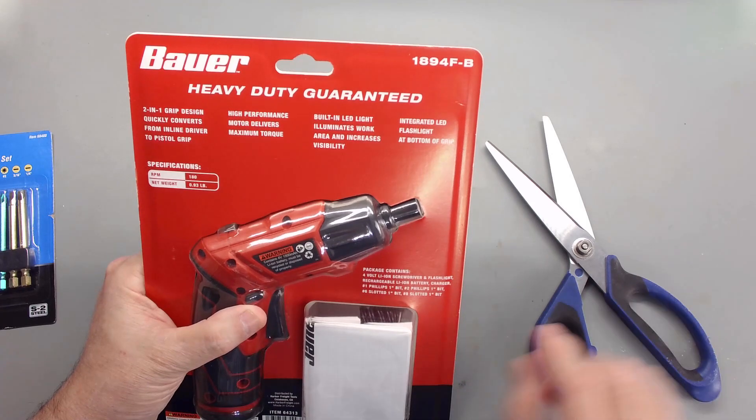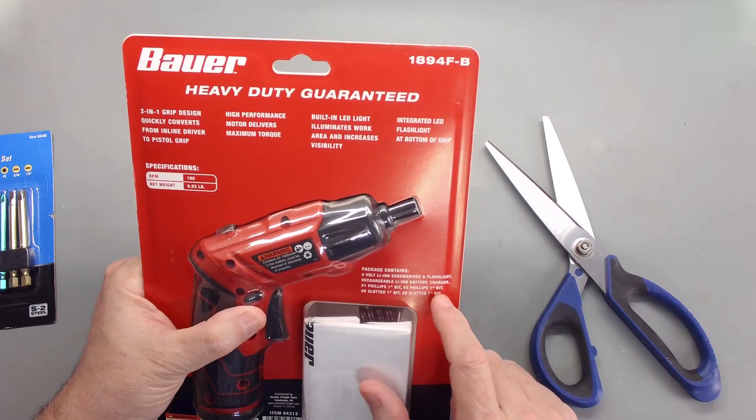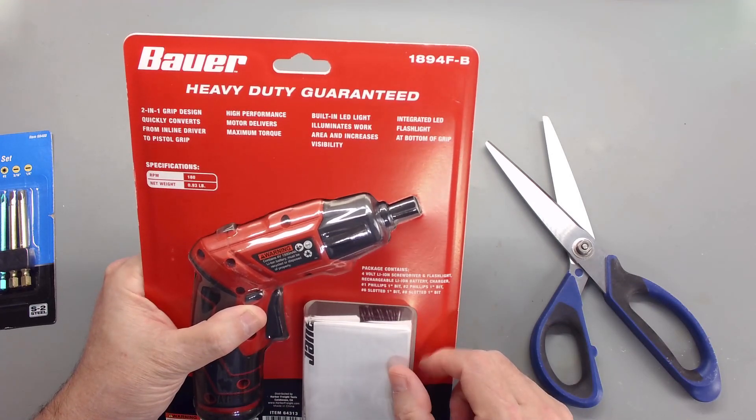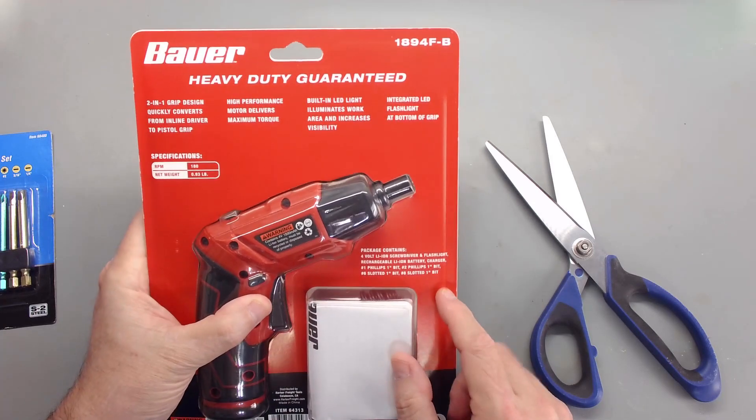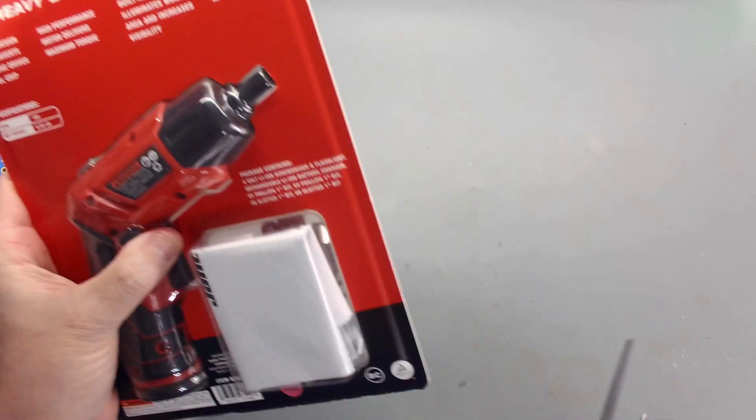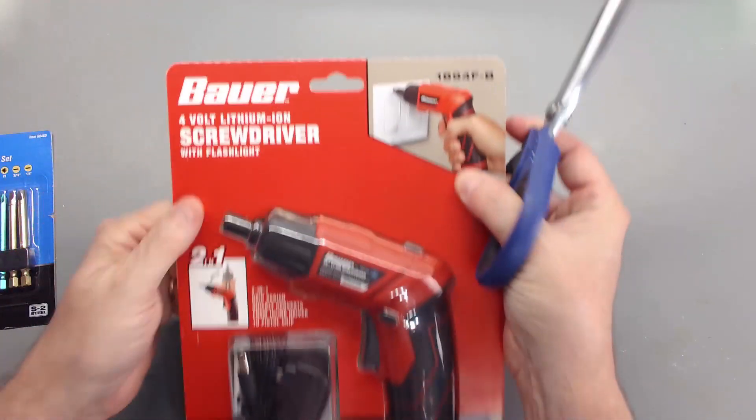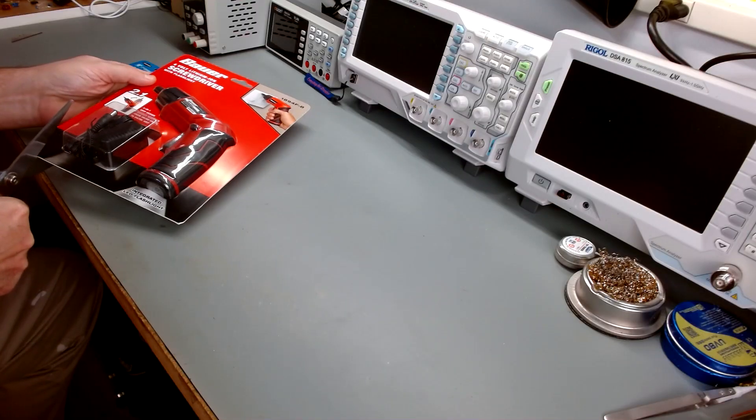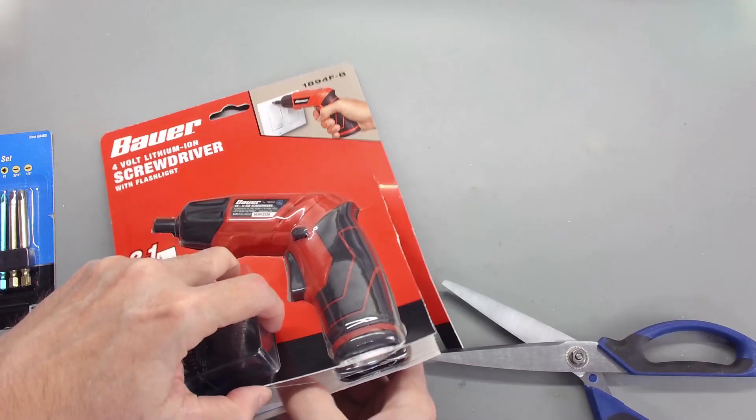And then a number one one-inch bit, number two one-inch bit, number six slotted one-inch bit, and number eight slotted one-inch bit. So that's pretty short bits. I guess I won't get too picky on where I cut it here, just go ahead and cut this rascal open and separate the plastic.